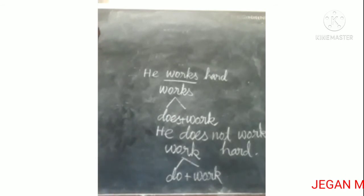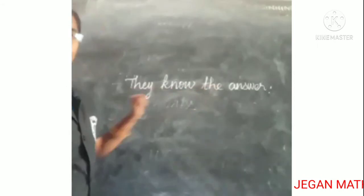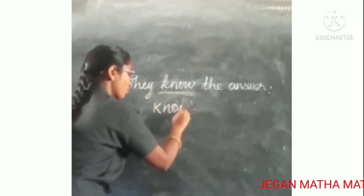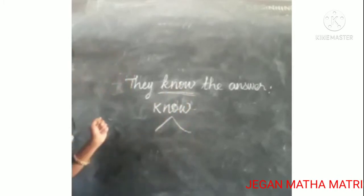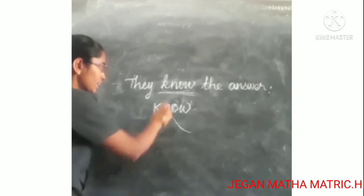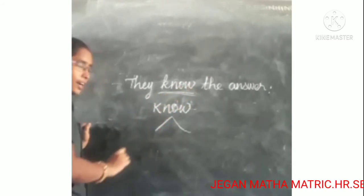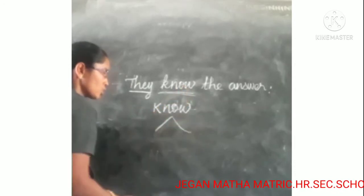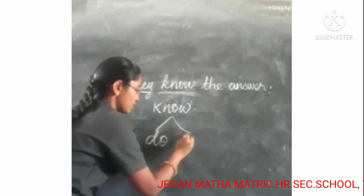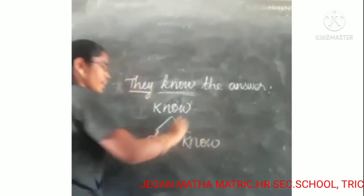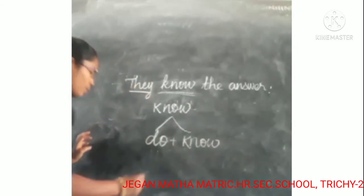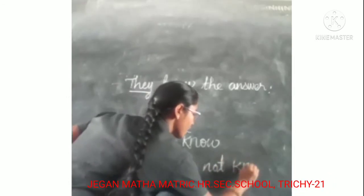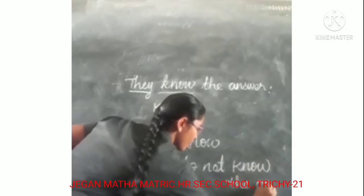Look at this sentence: 'They know the answer.' It is also present tense with the verb 'know'. The pronoun is 'they', so we do not add 's' or 'es', and we use 'do'. We divide the verb as 'do + know', then change to negative: 'They do not know the answer.'